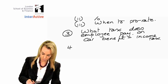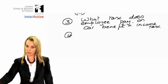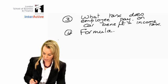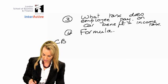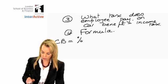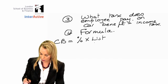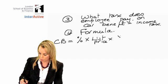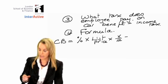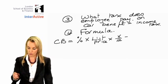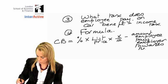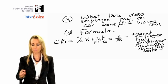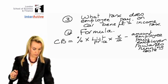The last point is how do you calculate the car benefit — the formula. Car benefit equals a percentage based on pollution, multiplied by the list price (the price when the car was brand new), multiplied by X over 12 if you need to adjust for number of months, less the amount the employee pays the employer towards the running costs. That's the formula — our second topic, the car benefit.